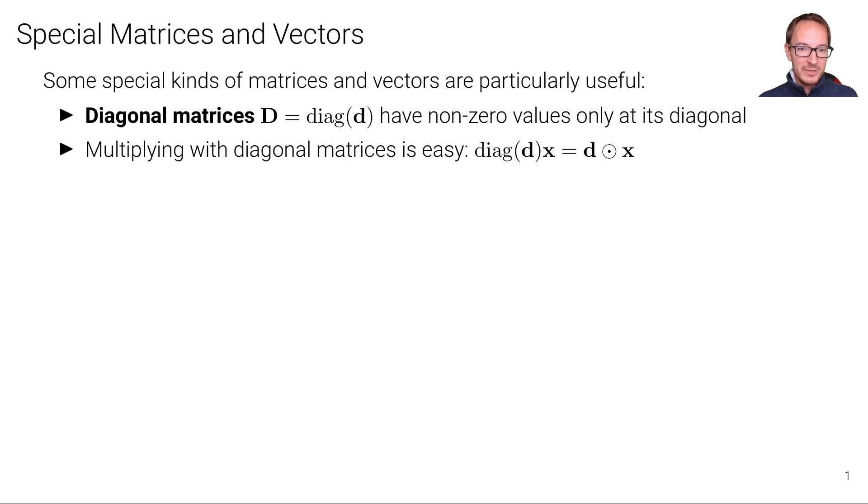Multiplying with diagonal matrices is particularly easy. If we have a diagonal matrix D and we multiply a vector with it, because we only have elements at the diagonal, we simply scale each element.